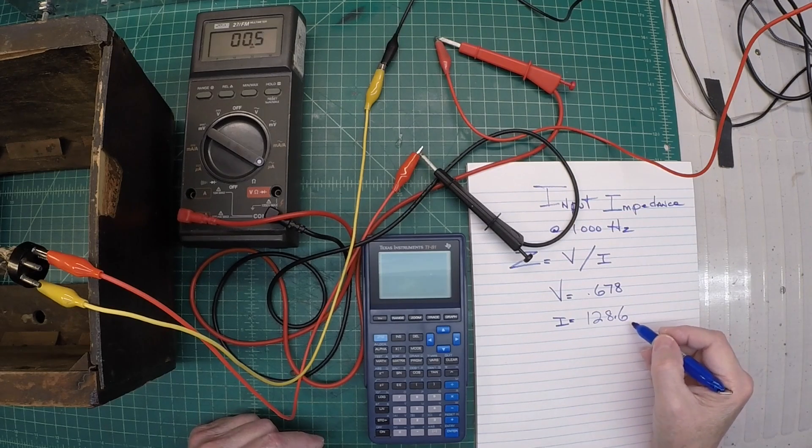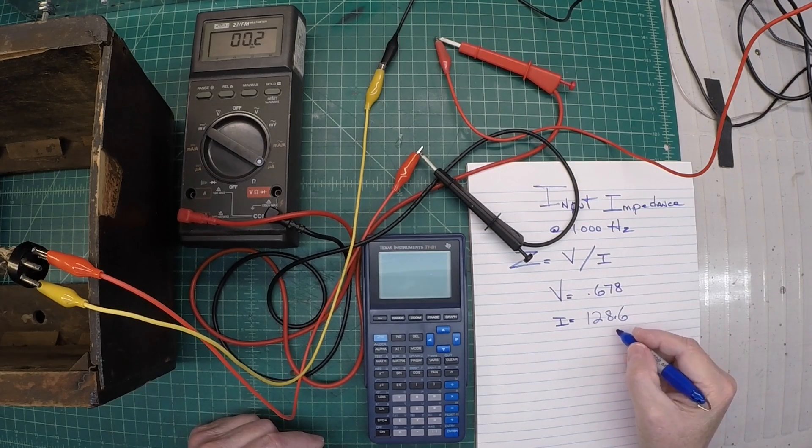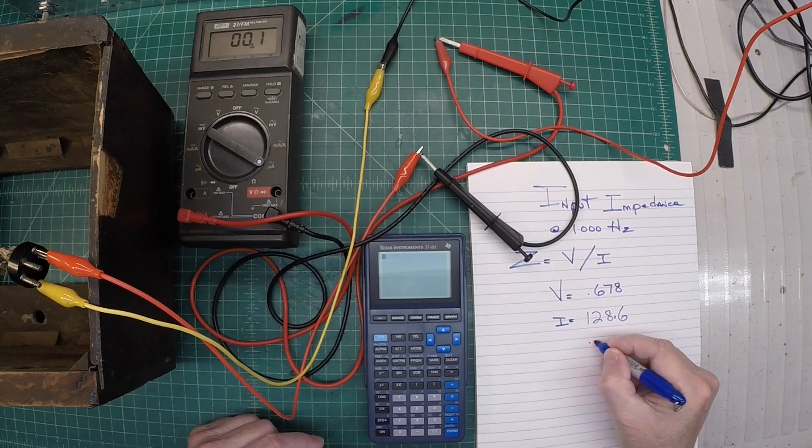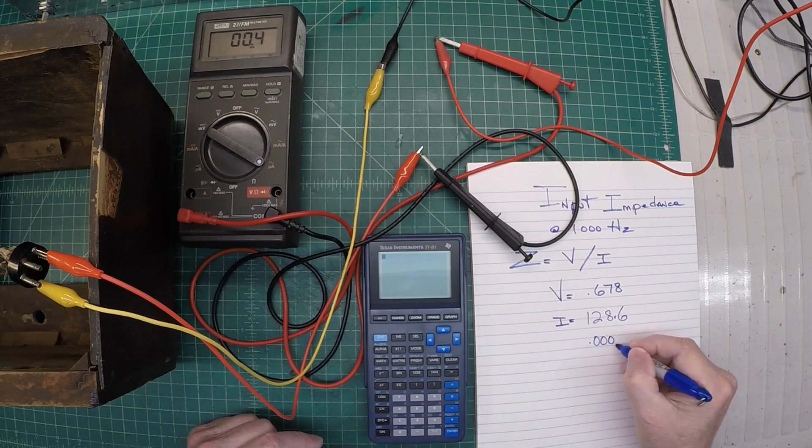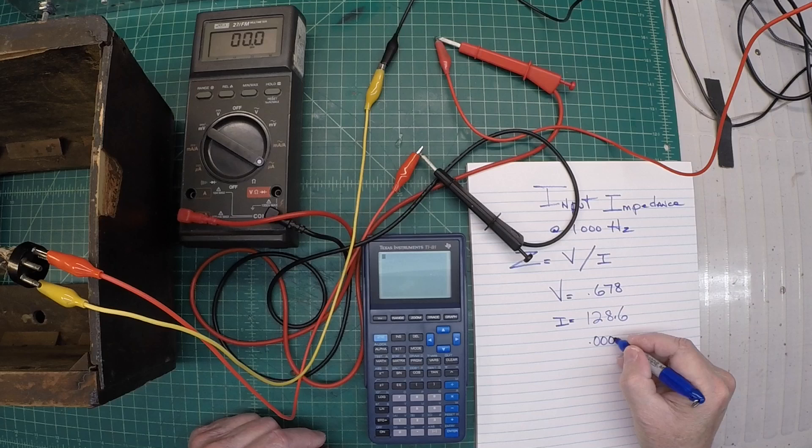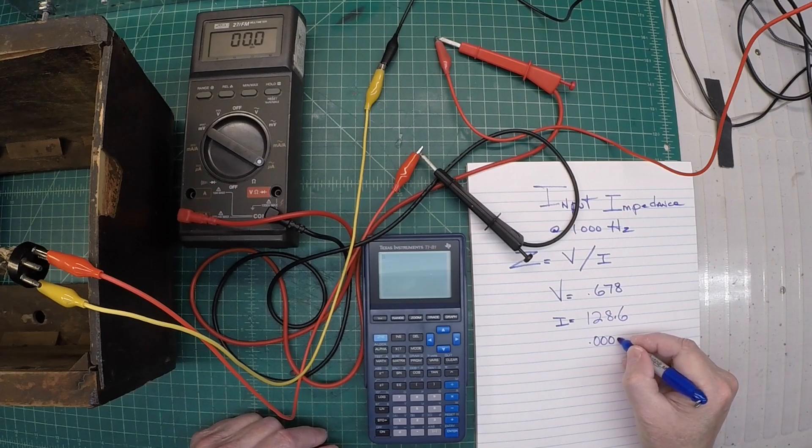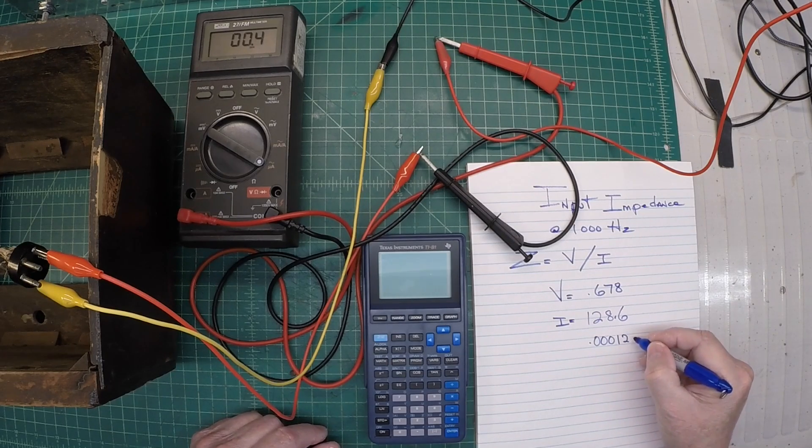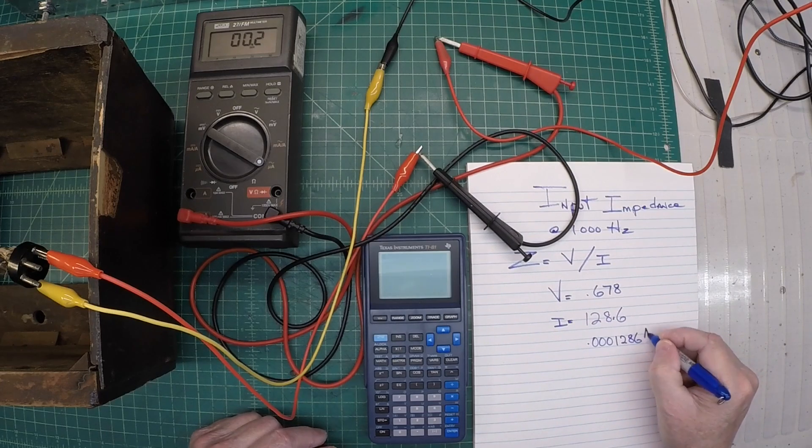So I need to take the microamps here and convert that back to amps. So that's going to be 0.0001286 amps. I hope I'm doing this right and I got my decimals correct here.